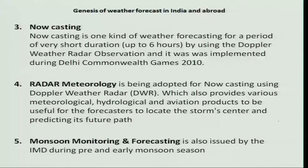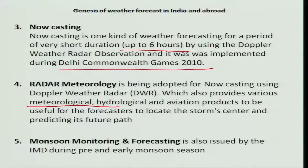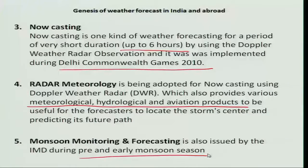Third, nowcasting is being used by IMD to provide very short duration forecasting within a period of 6 hours using Doppler weather radar observations. It was first implemented in New Delhi during the Commonwealth Games in 2010. Fourth, radar meteorology uses the same Doppler weather radar to provide weather forecasting for meteorological, hydrological, and aviation purposes, and is useful for forecasters to locate storm centers and predict their future path. Fifth, monsoon monitoring and forecasting is issued by IMD to provide forecasting information on the onset of monsoon in pre- and early monsoon periods.